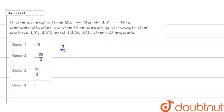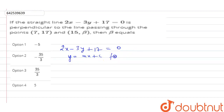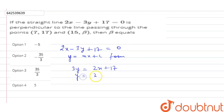So, 2x - 3y + 17 = 0. Now we will convert this into y = mx + c form. So, 3y = 2x + 17, and y = (2x/3) + (17/3). This is in the form y = mx + c, so m will be 2/3.